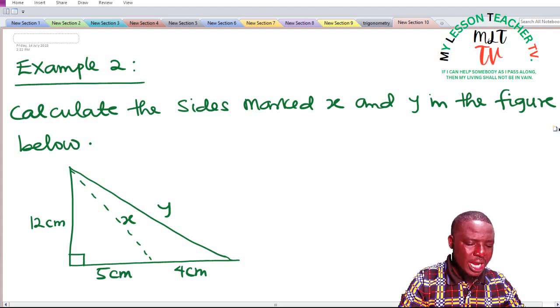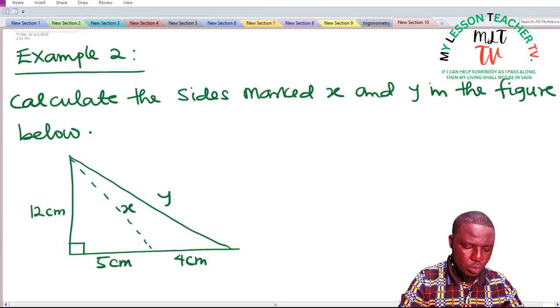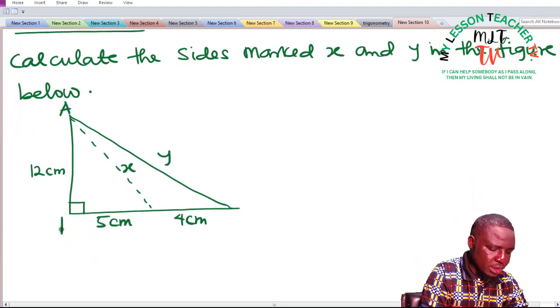Example 2 says we should calculate the sides marked x and y in the figure below. Now we have a right angle triangle, let me call it ABC.